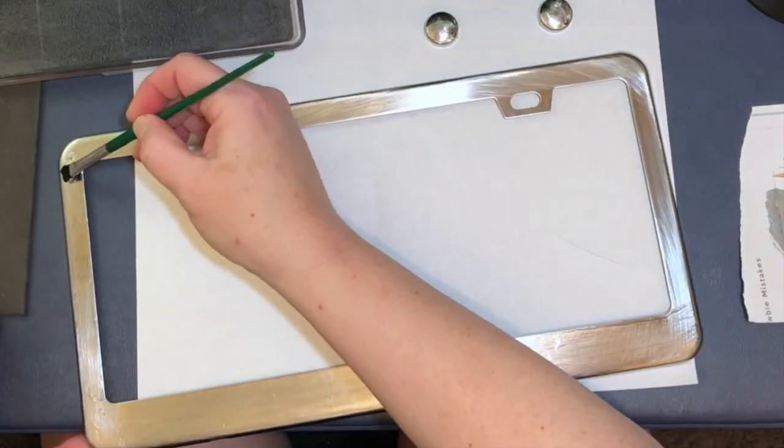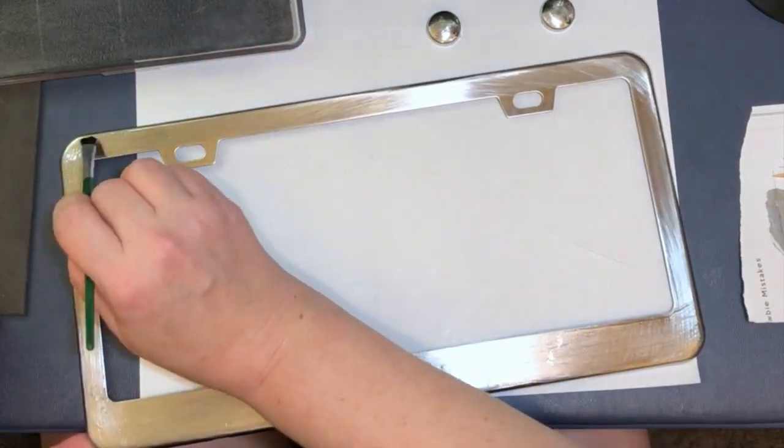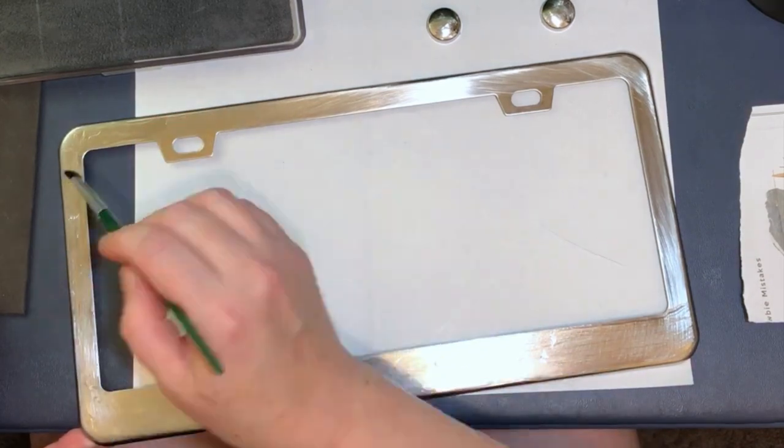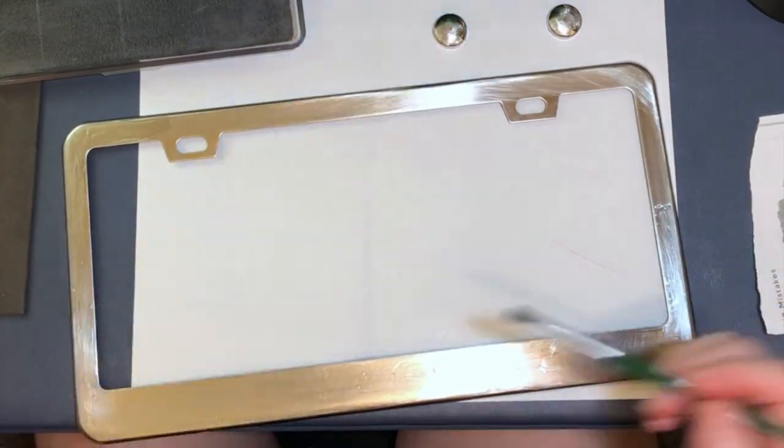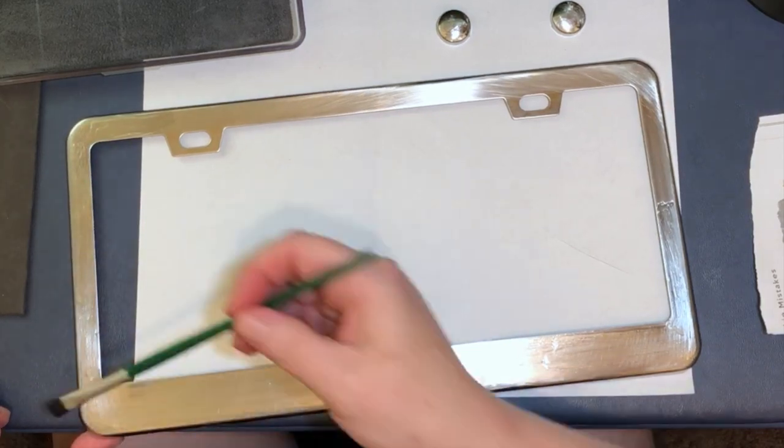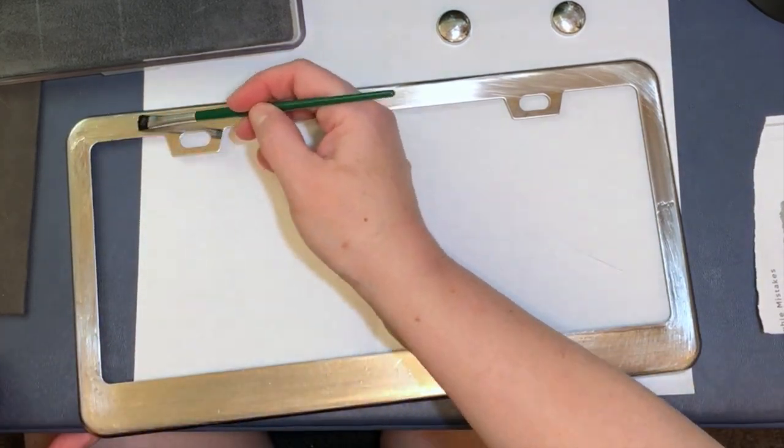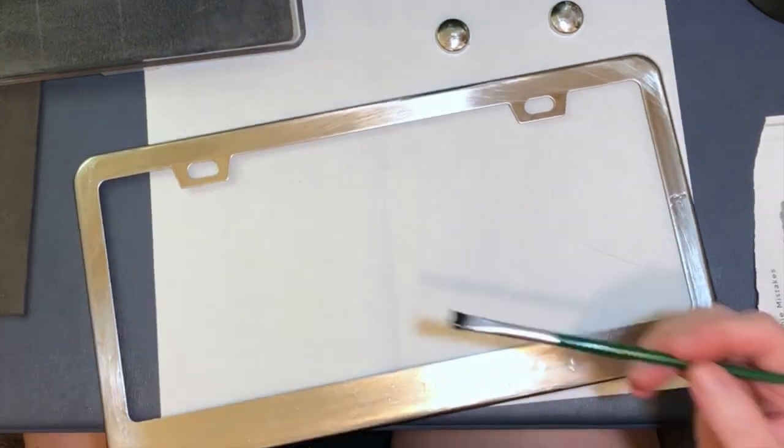Basically what you're going to do is you're going to pre-sand the frame and the caps. You're going to get it to where it's just got enough of a surfaced texture. And then you're going to clean it with an alcohol swab or an alcohol wipe until it comes back completely clean.